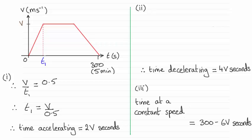Now when it comes to the time decelerating, this section here, if I drop a dotted line there, let's say that that time here is t2, and the time decelerating would be this time across here. I'll call that big T.